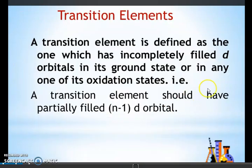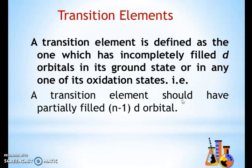Now transition elements — D block elements are generally called transition elements, but these are different. A transition element is defined as one which has an incompletely filled d-orbital in its ground state or in any ionic form (any oxidation state). If there is an incompletely filled d-orbital, that element is known as a transition element.